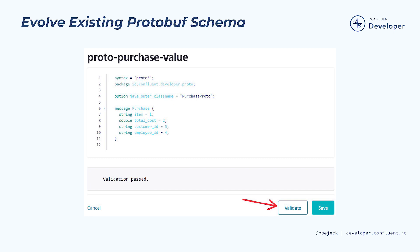First, you'll evolve the protobuf schema using the Confluent Cloud UI by adding a new field, validating the updated schema, and saving the new schema version.